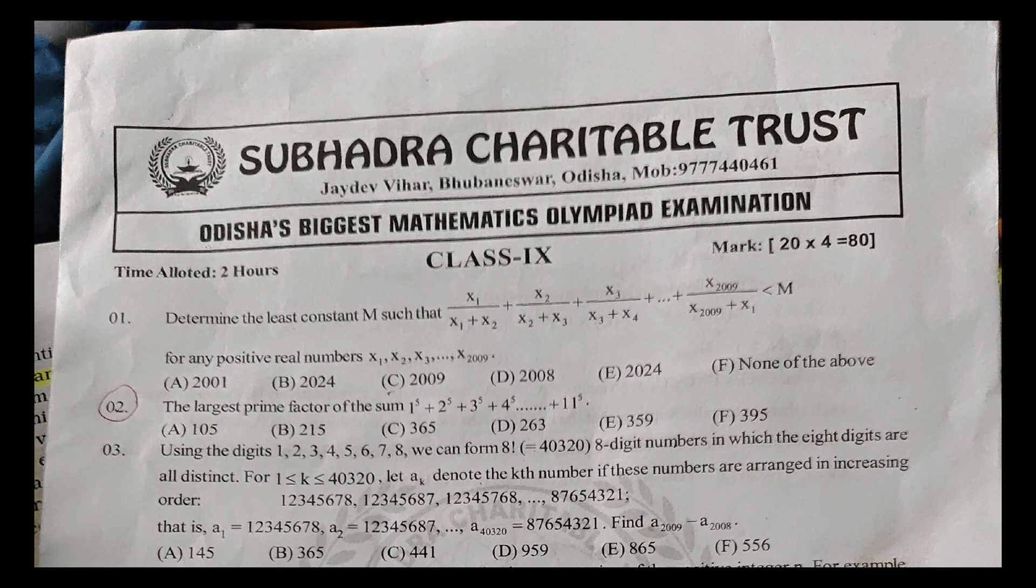Using digits 1, 2, 3, ..., 8, we can form a 8-digit factorial number 40,328 in which the 8 digits are all distinct. The answer is C, 556.